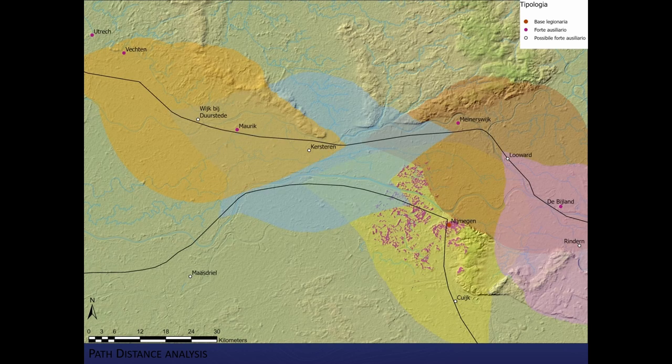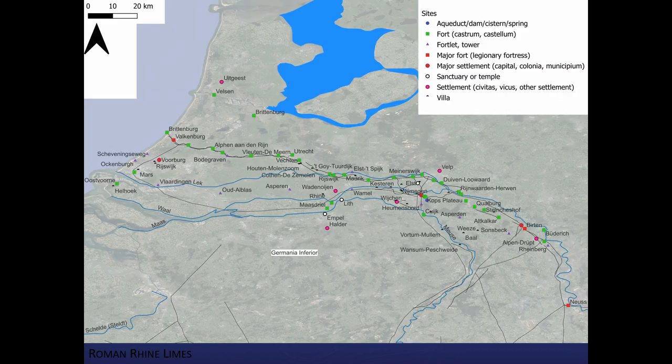Also, in the area between Wijck and Kesteren, the distance analysis seems to confirm the excellent position of these sites to accommodate the forts. In a second phase of this research about the Limes, we enlarge the analysis to the whole Limes system in the Rhine area, and we consider also the presence of watchtowers and all sites known in the Digital Atlas of the Roman Empire.